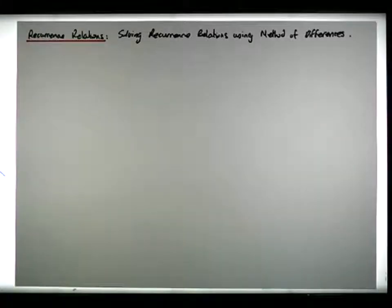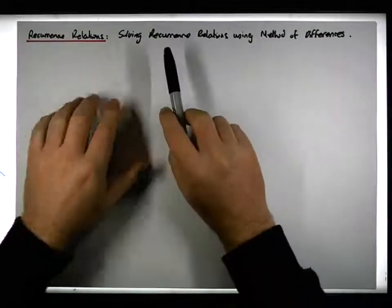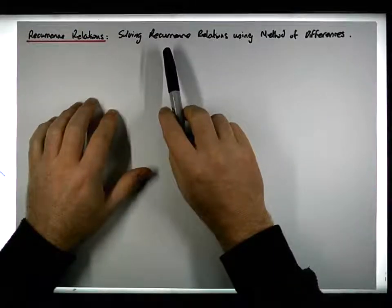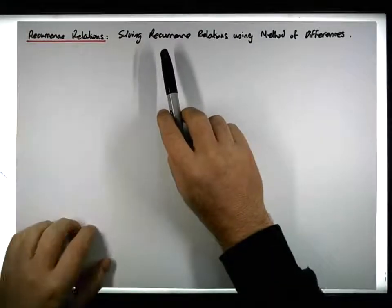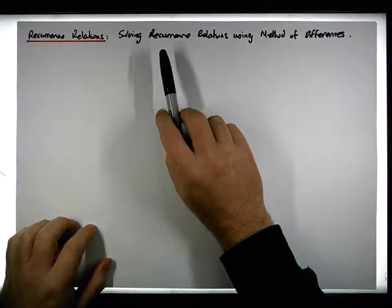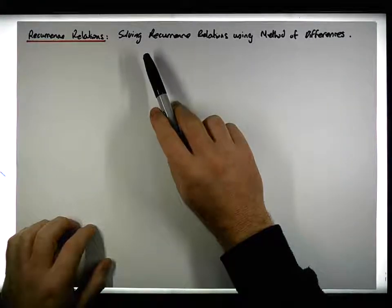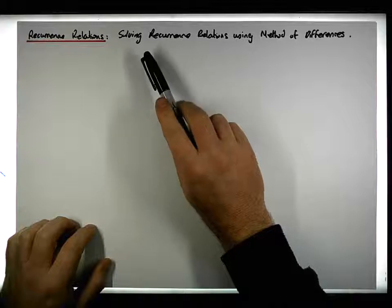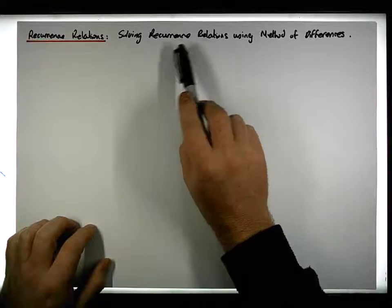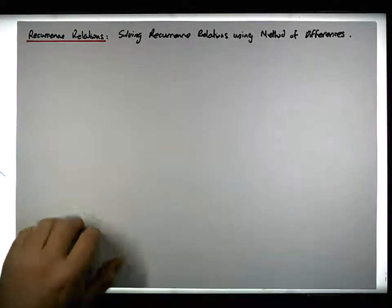Hi guys, this is Jonathan Lambert with Maths and Stats. In this video, another in our series dealing with recurrence relations, we're going to concentrate on how to find a closed form solution to a recurrence relation using what's known as the method of differences.